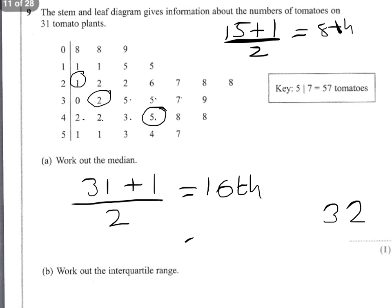So the interquartile range is 45 subtract 21. And that will give you 24. So the interquartile range is 24.